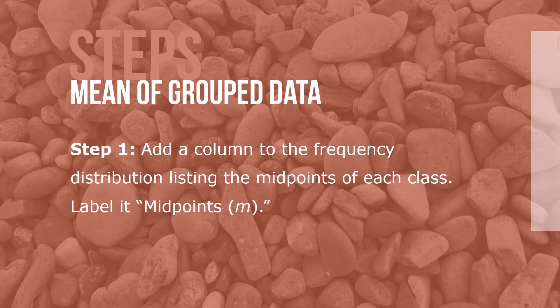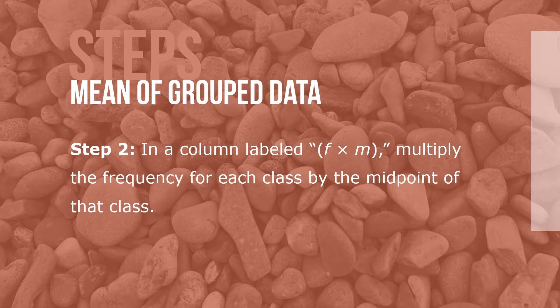Here are the steps for determining the mean of grouped data. Step 1: Add a column to the frequency distribution listing the midpoints of each class. Label it midpoints m. Step 2: In a column labeled f times m, multiply the frequency of each class by the midpoint of that class.